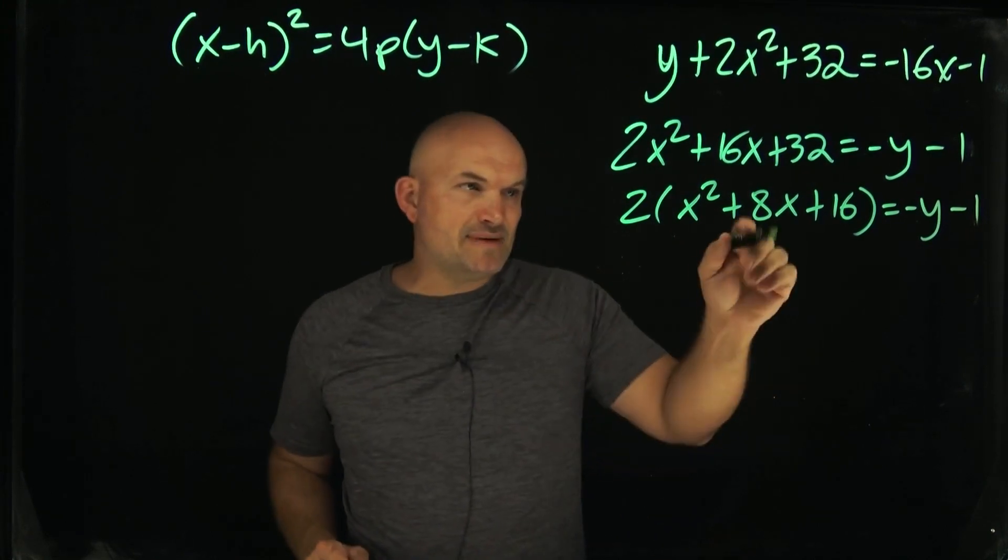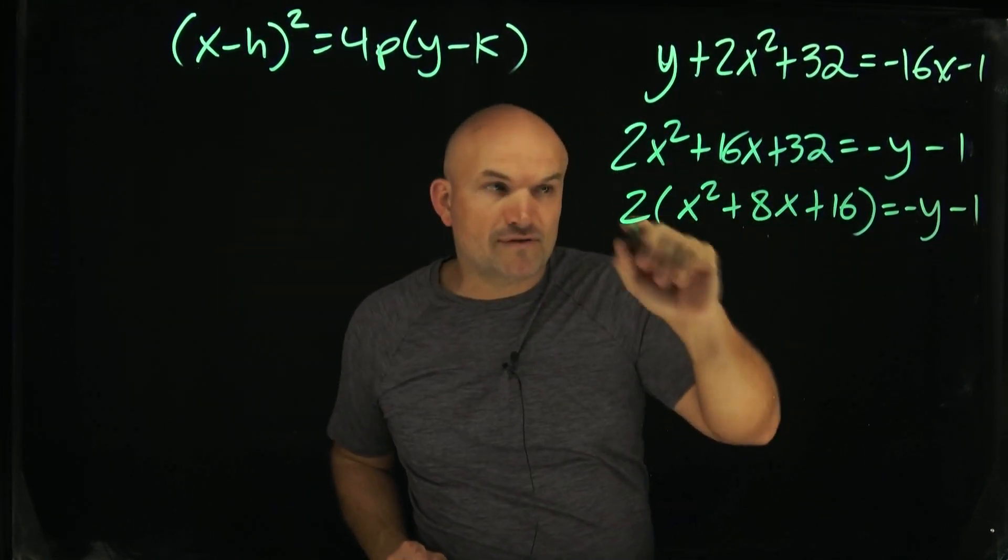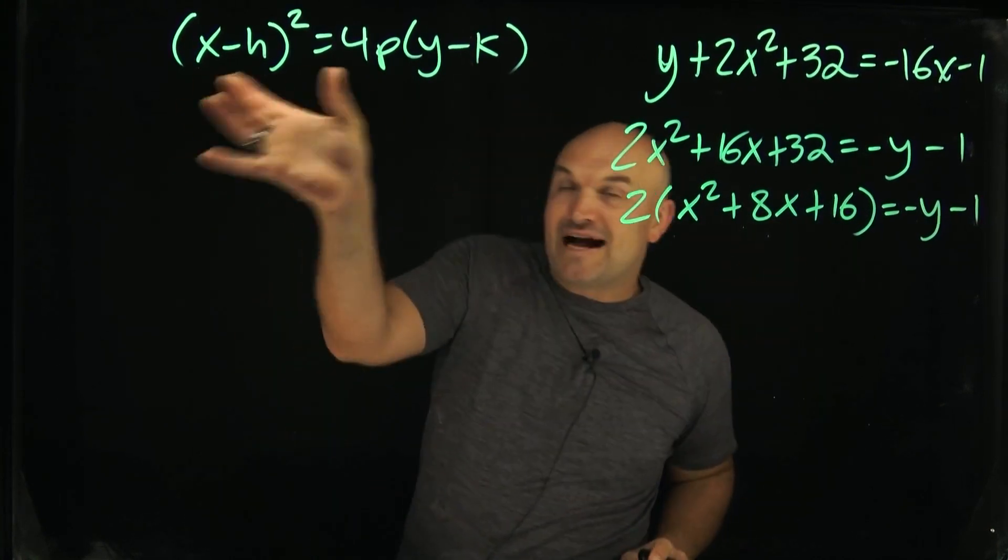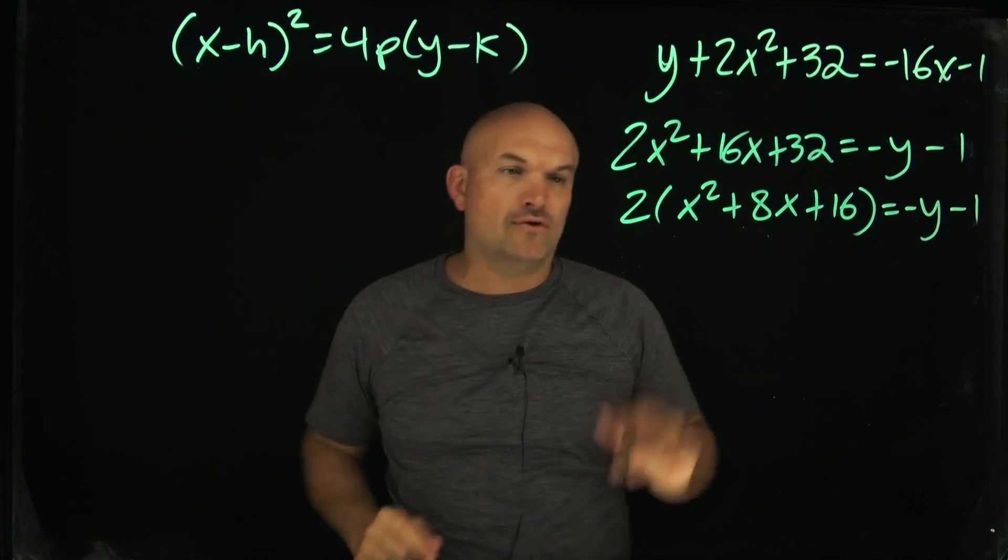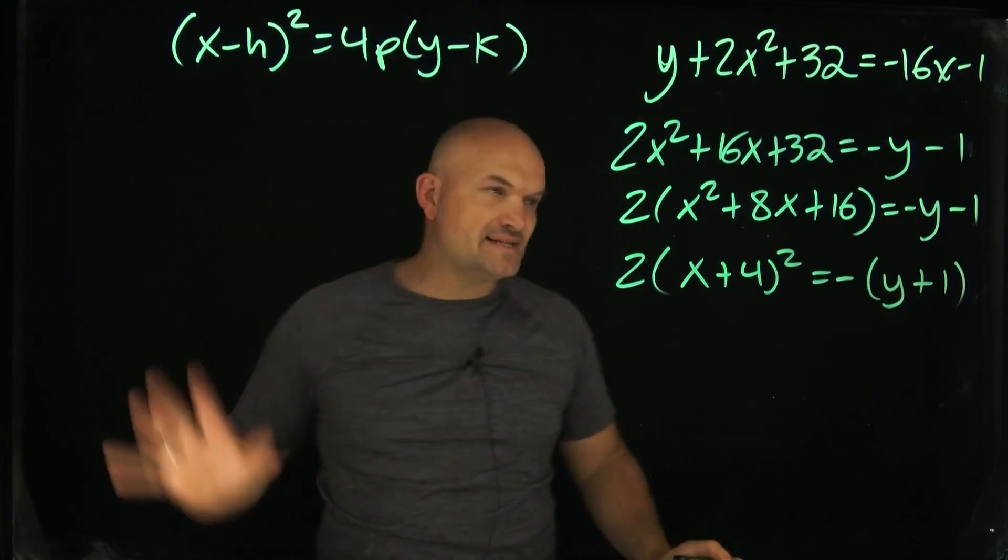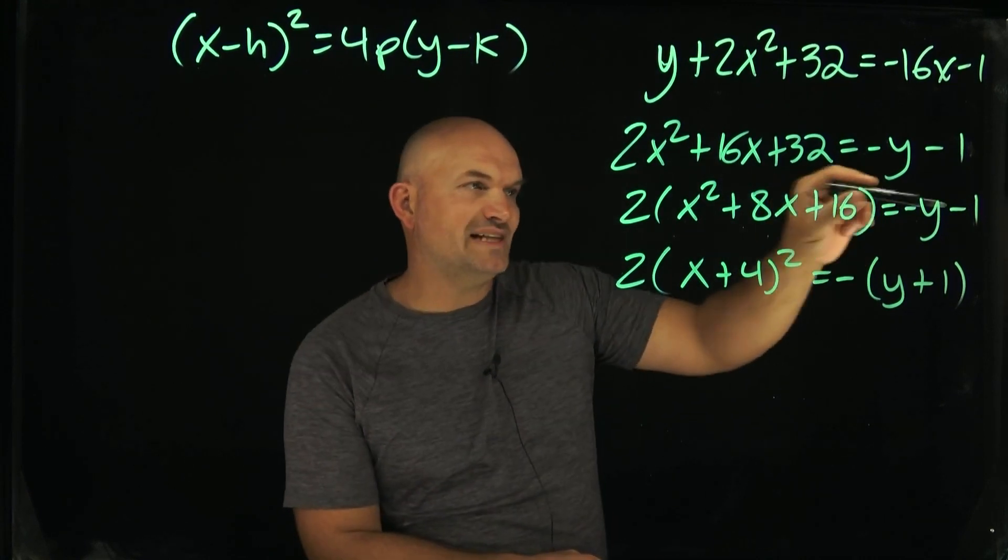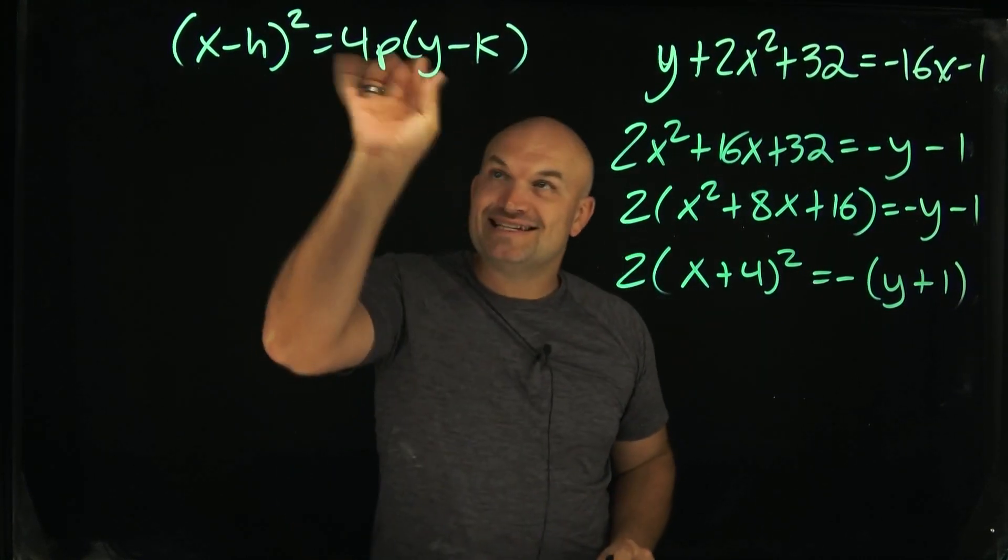And the reason why I like to do that is because now what I've done is I've created that perfect square trinomial. You can see that this is a perfect square trinomial that can be now factored down into a binomial squared, exactly what I was looking for. So here comes the other next mistake students will make. A lot of students will leave their equation like this, negative y minus one. Don't do that. What you need to do is you need to have it exactly in this format.